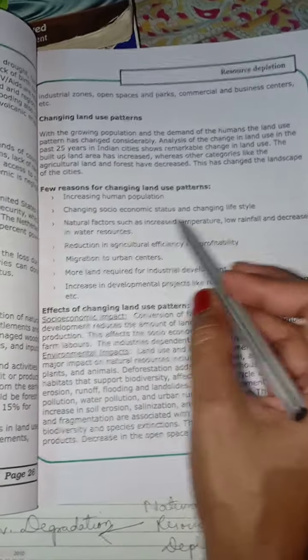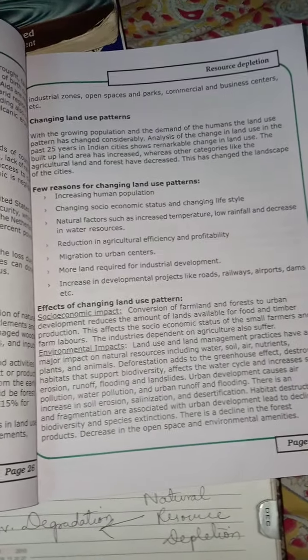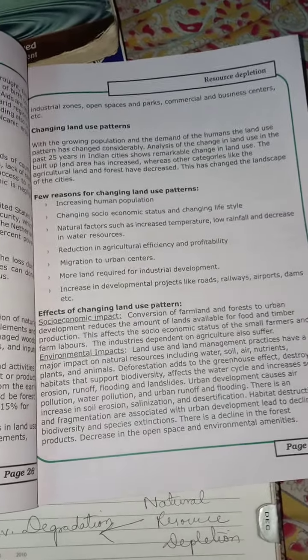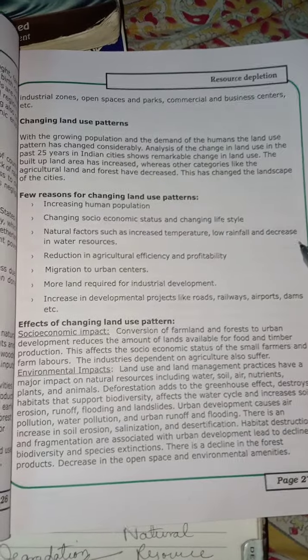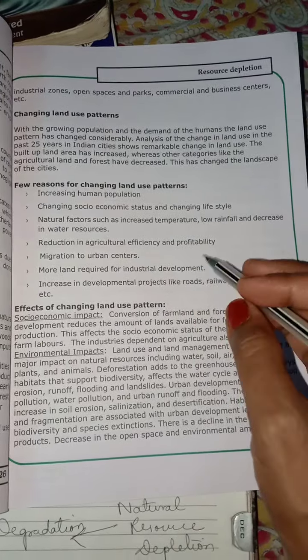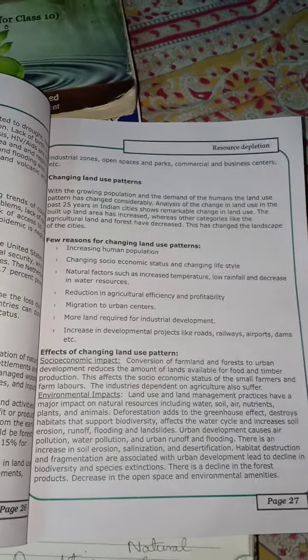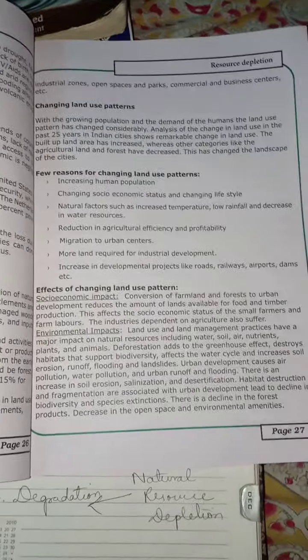Changing socio-economic conditions and lifestyle — people wanting elite-class lifestyles with bungalows and duplexes — also affect land use patterns. Natural factors like temperature change, low rainfall, and decrease in water resources or groundwater level also play a role. There is also a reduction in agricultural efficiency because excessive use of fertilizers and pesticides is causing the soil to lose its natural fertility.